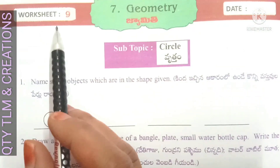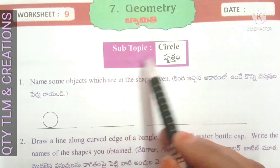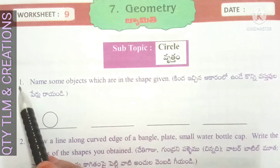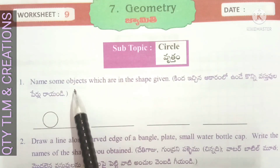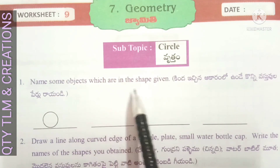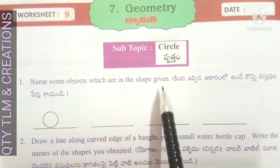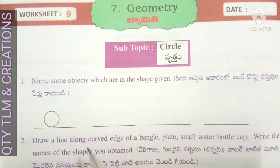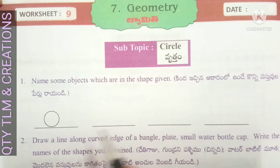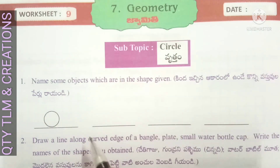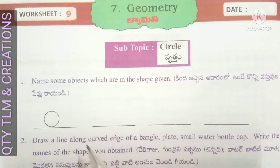Next, Worksheet number 9, subtopic: Circle. First question: name some objects which are in the shape given. Bangle, small plate, etc. look like a circle. Globe, wheel, ball.